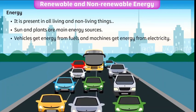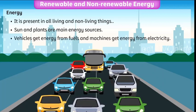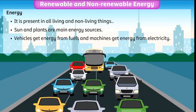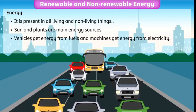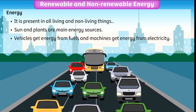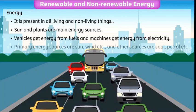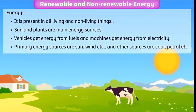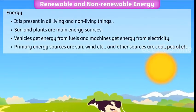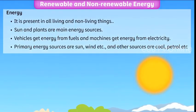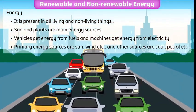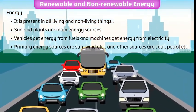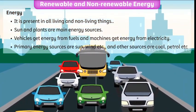Machines work as they get energy from electricity. Some of these energy forms are obtained directly from primary sources like sun and wind, whereas others are obtained from sources like coal and petrol.